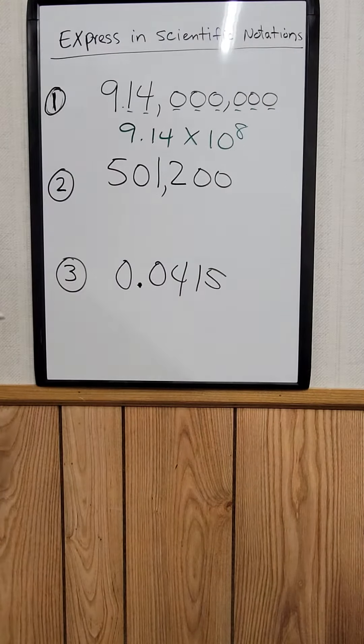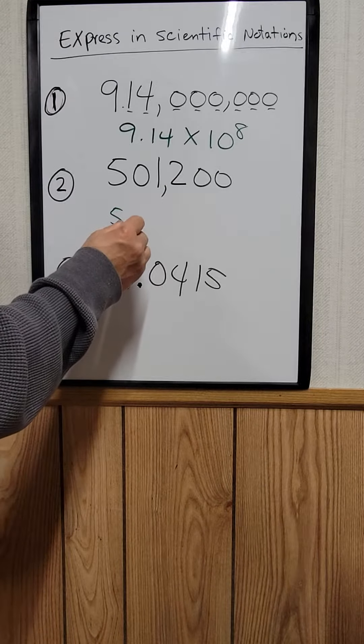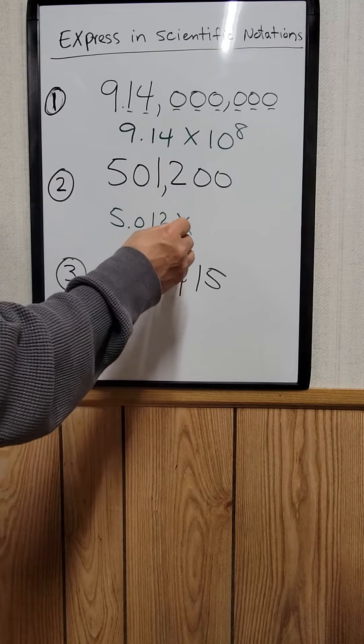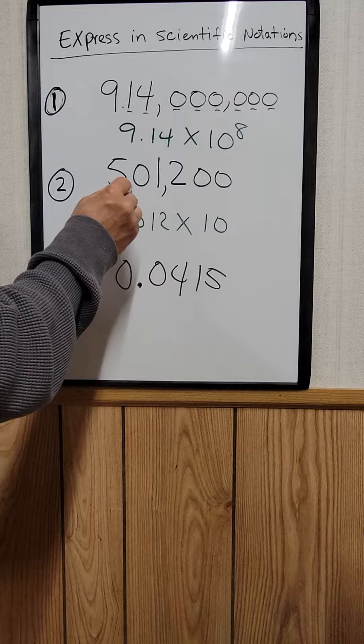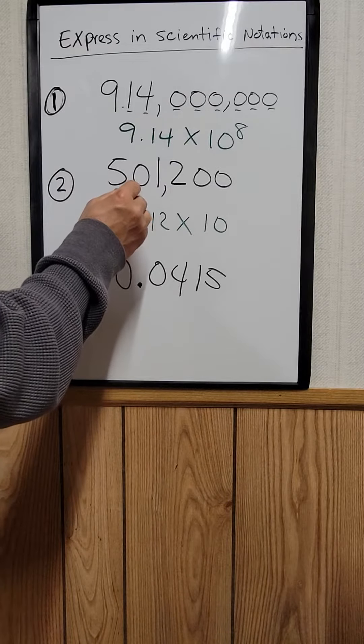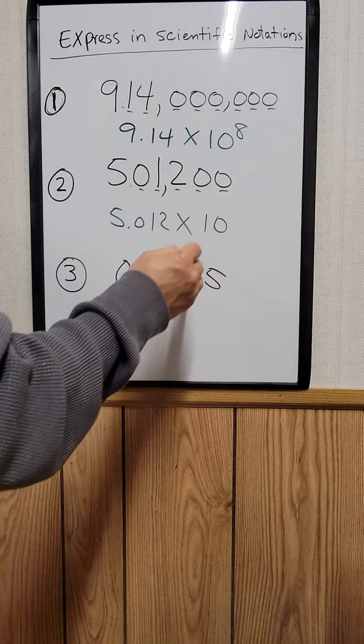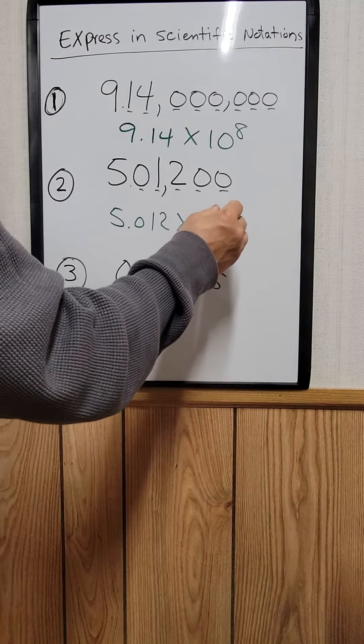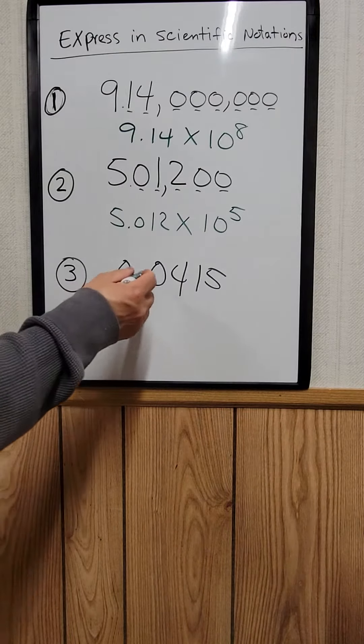And for this one, we just write 5.012 times 10. So after the decimal point from here, you just count: 1, 2, 3, 4, 5, to the fifth power.